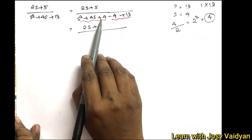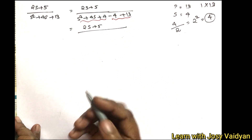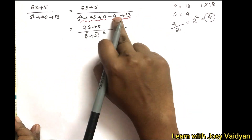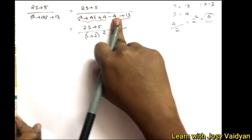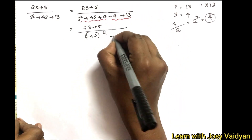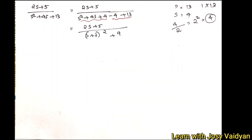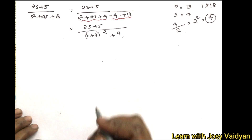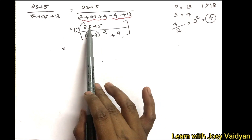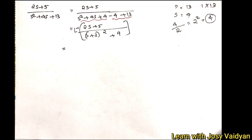We will have s plus 2 the whole square, and we add minus 4 plus 13, which gives us plus 9. So the denominator becomes s plus 2 the whole square plus 9.